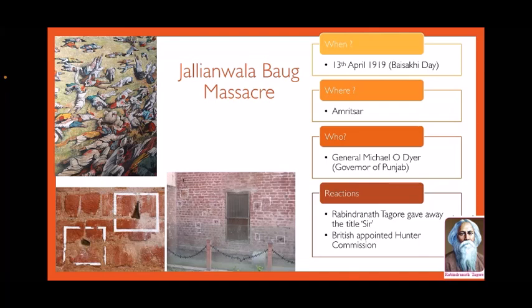General Dyer came to Jallianwala Bagh with armed force. He closed the only gate and, without giving any prior notification to the disarmed innocent people, ordered his soldiers to open fire. 1,660 rounds were fired; the army continued firing until the ammunition ran out. Four hundred people including men and women were killed and many were wounded. Curfew was then imposed, preventing immediate treatment of the injured. Military law was enforced in Punjab and many people were sent to jail.